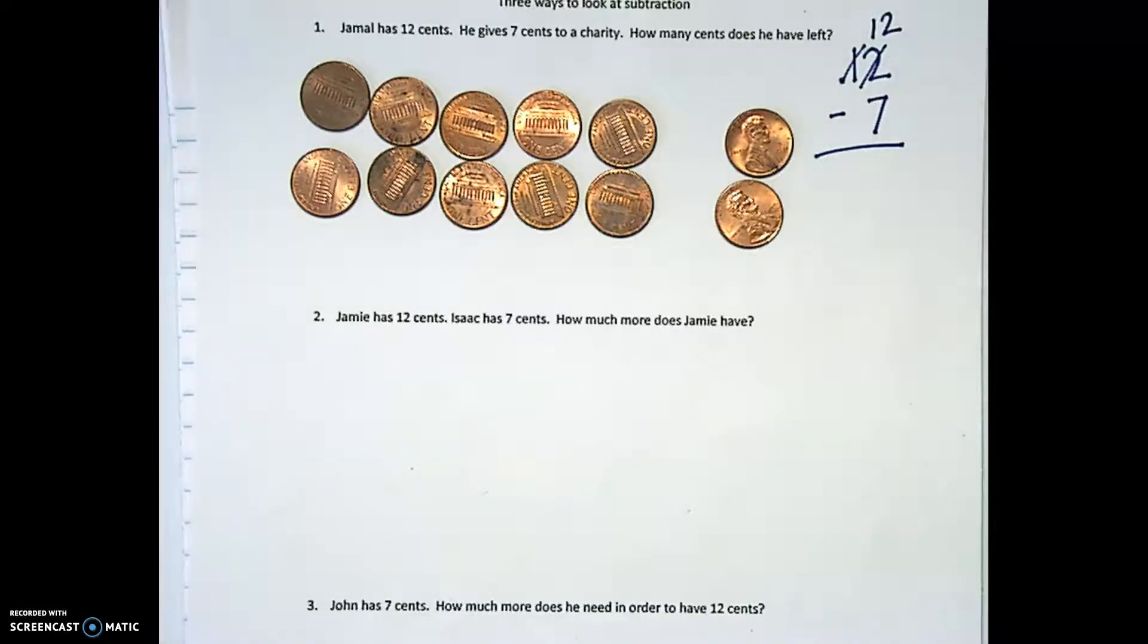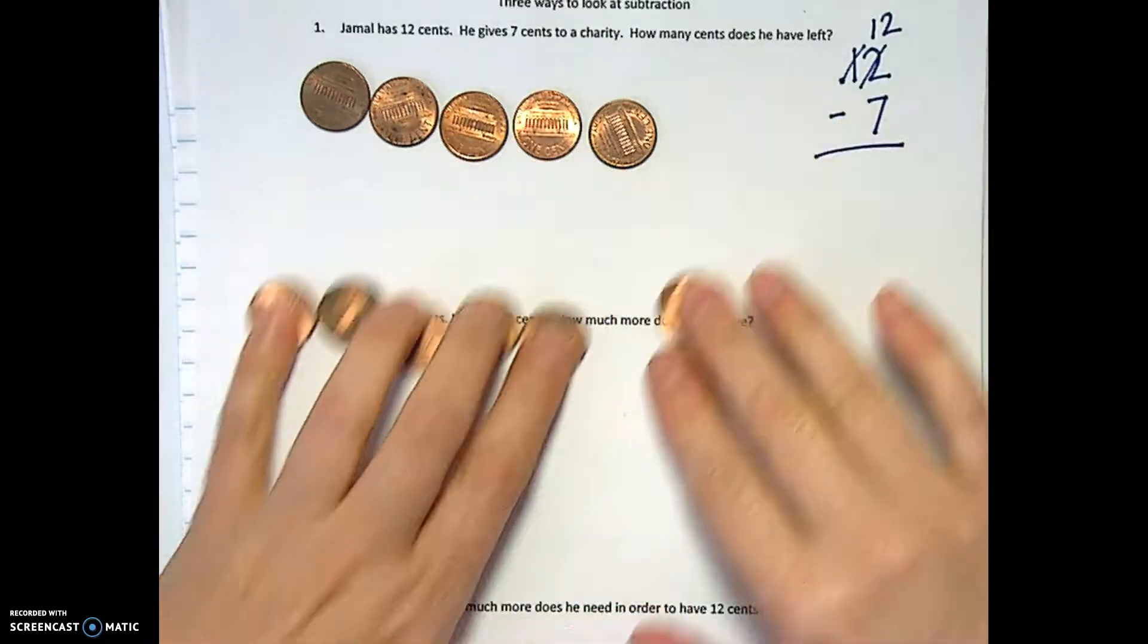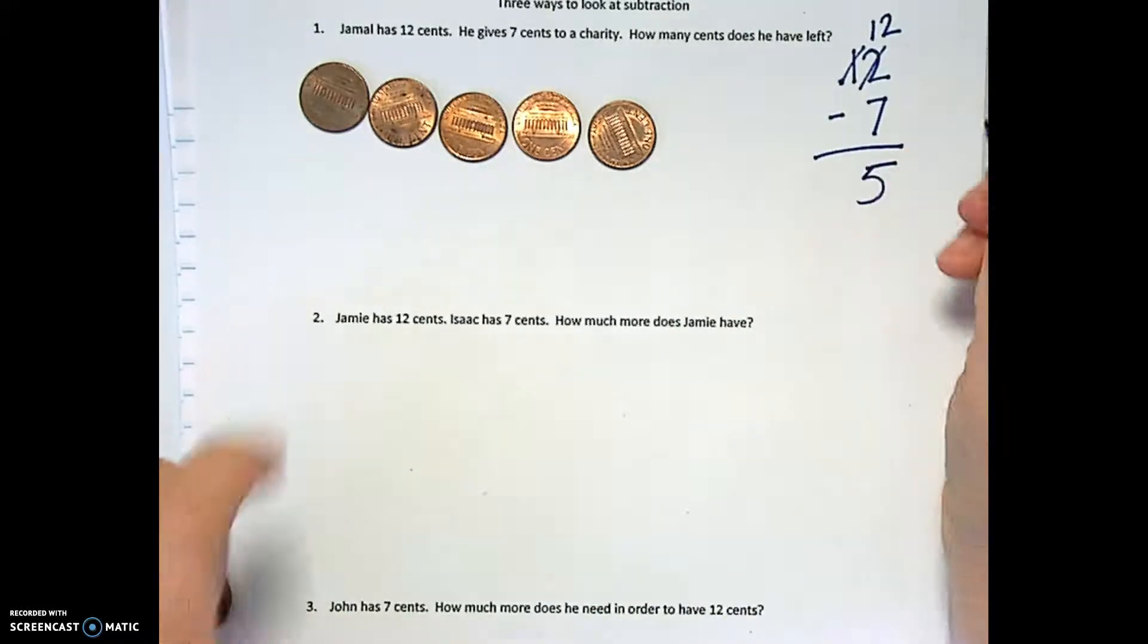And we can take away 7 pretty easily. I think I'm going to do it this way. They are gone. We took them away and our answer is a 5, which you can show with base blocks or bundling. I just happen to want to use pennies for this one.